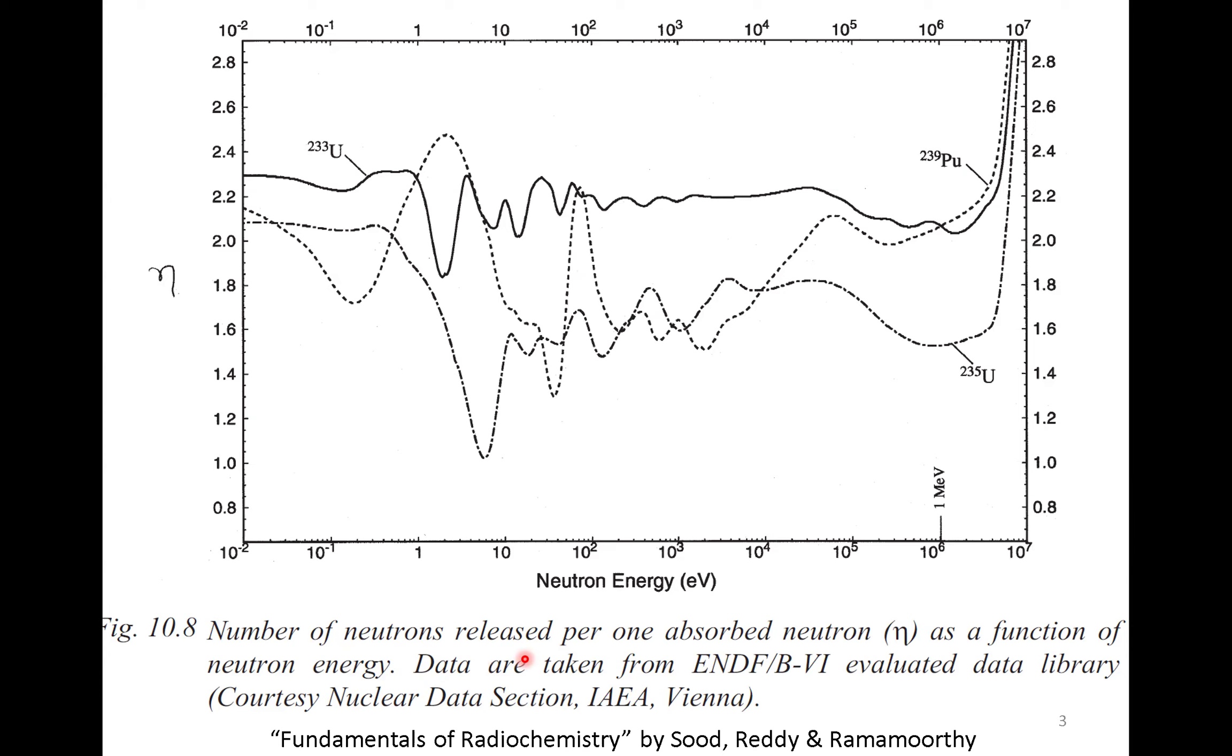When a fissile nucleus takes up one neutron, it releases more neutron than it consumes. This is very critical for sustaining the chain reaction. As you can see, when we are in thermal neutron regime, all the three fuels produce more than the neutrons they consume.